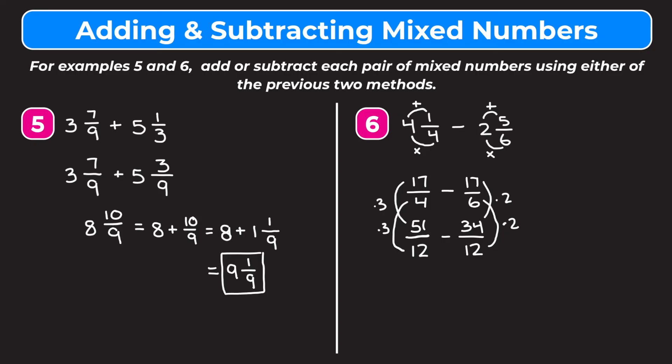Now we want to subtract our numerators. So 51 minus 34 is going to give us 17 on the top. We keep our denominator as it is, so we get 17 twelfths. Finally, we want to write this as a mixed number. 12 goes into 17 one time, and there is a remainder of 5. So we get that 17 twelfths is equal to 1 and 5 twelfths. So our final answer is 1 and 5 twelfths.